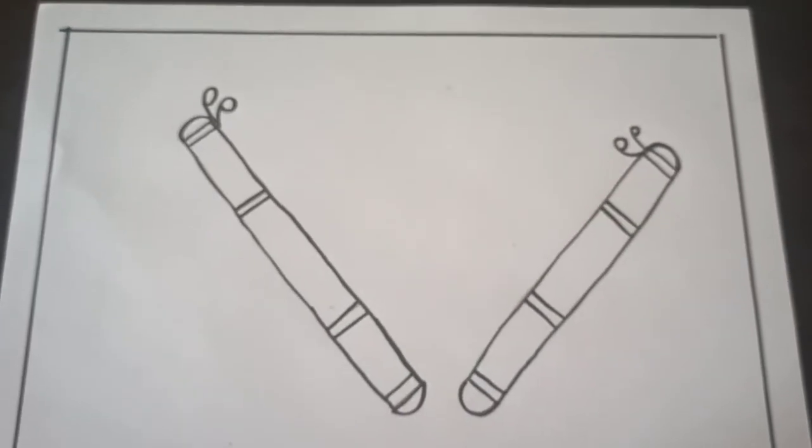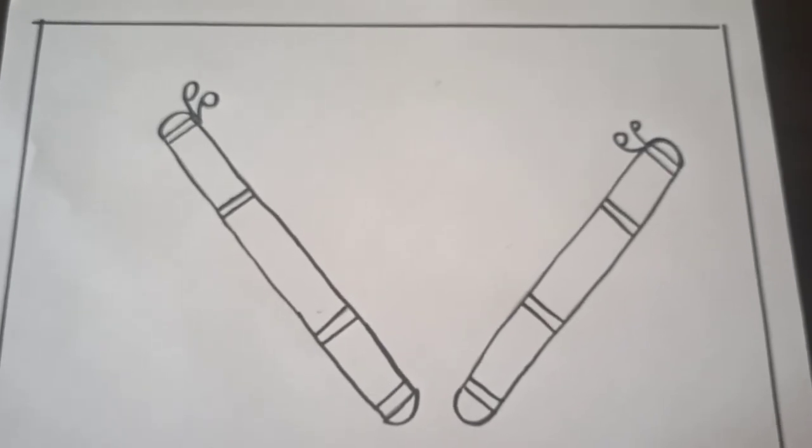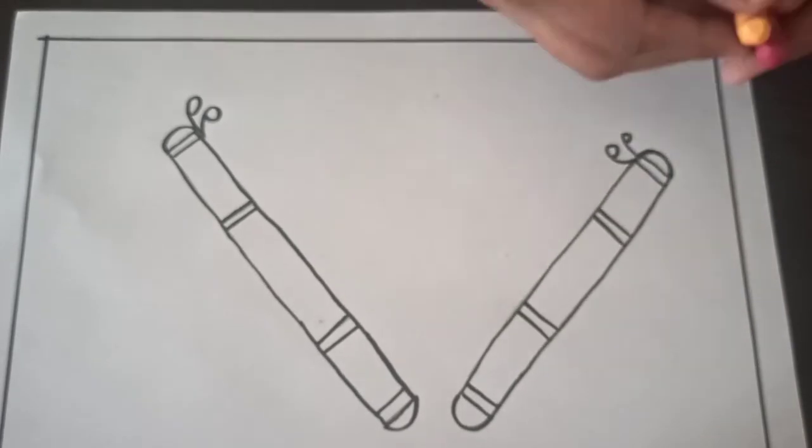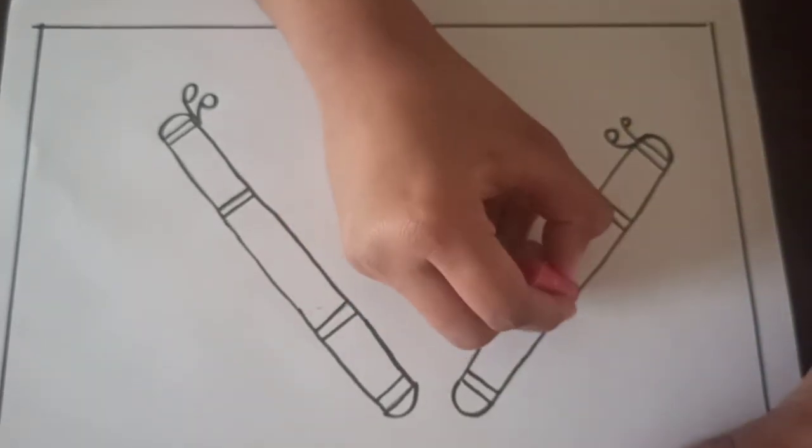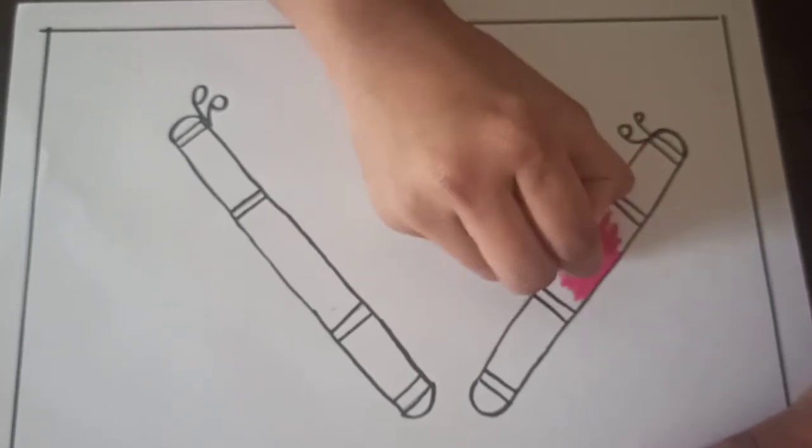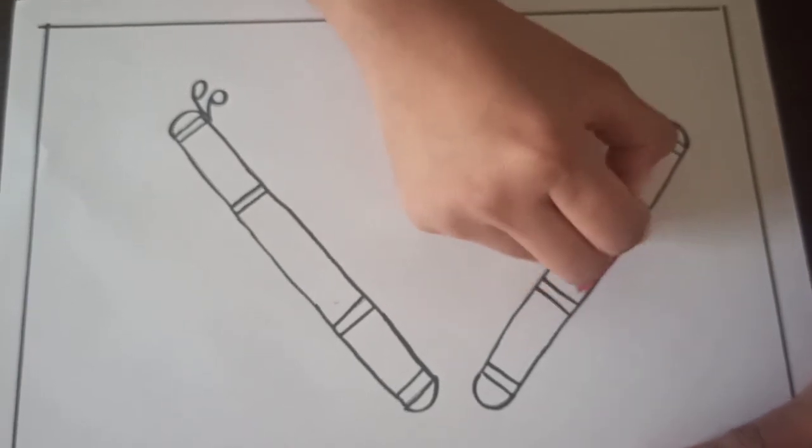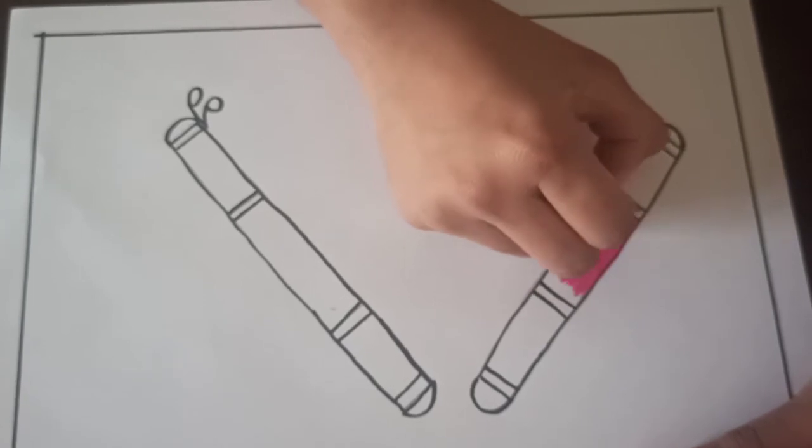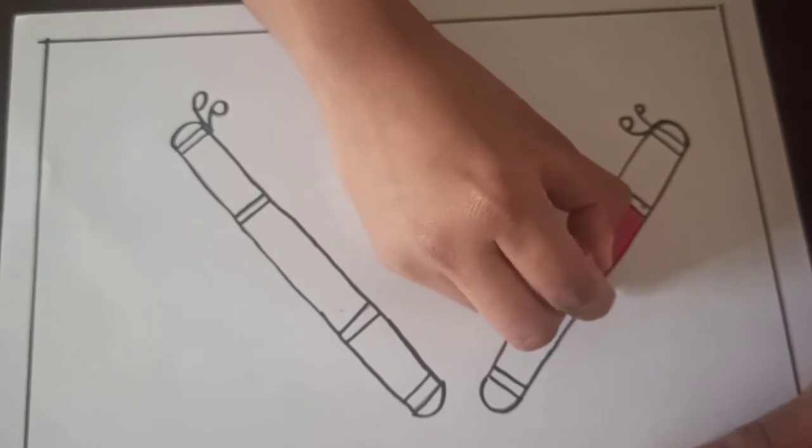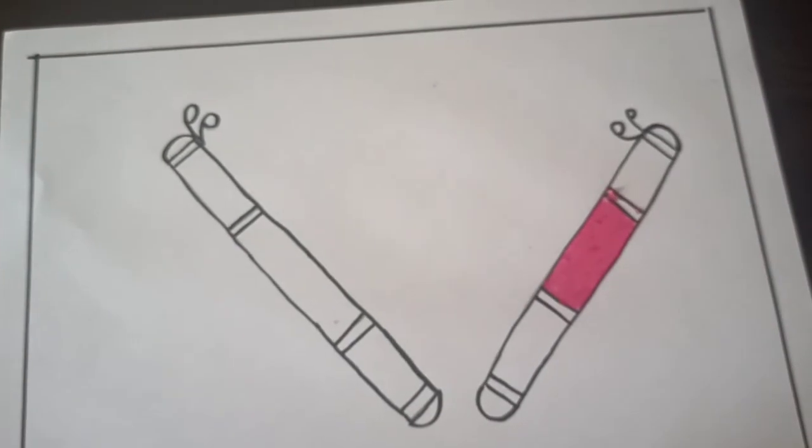Now take colors. And colors you can use any colors. Your choice. And we will color this picture. So for that here I am using two colors. So first I am coloring the middle portion of this dandiyas. You can use any color combination. And fill the color properly. Any slipping way. So that it will look good. This way.